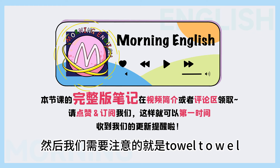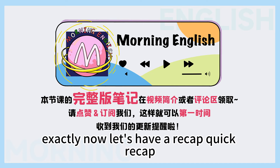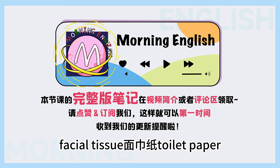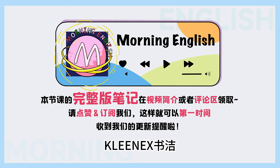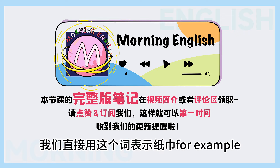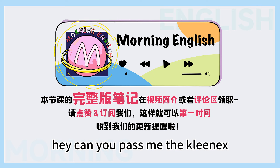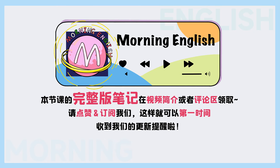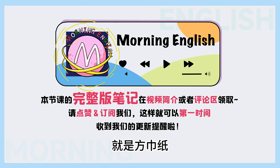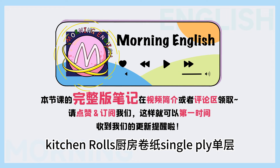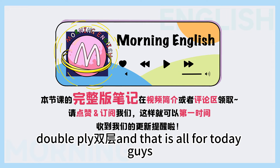Let's have a quick recap! Tissue — 纸巾; Facial tissue — 面精致; Toilet paper — 卫生纸; Kleenex — 舒洁, 它是全球最知名的面精致品牌之一, 在口语当中我们直接用这个词表示纸巾. 'Can you pass me the Kleenex? I think I have a cold.' Napkin — 餐巾纸, 方巾纸; Toilet rolls — 卷纸; Kitchen rolls — 厨房卷纸; Single ply — 单层; Double ply — 双层。